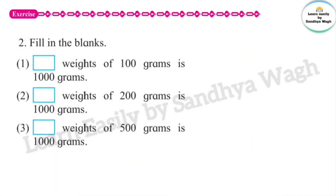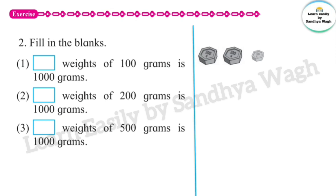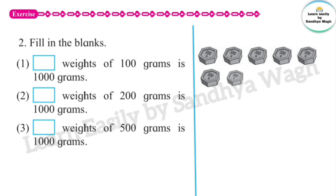Question no. 2: Fill in the blanks. Dash weights of 100 grams is 1000 grams. Let us see: 100, 200, 300, 400, 500, 600, 700, 800, 900, and 1000 grams. So 10 weights of 100 grams make 1000 grams. Answer: 10.